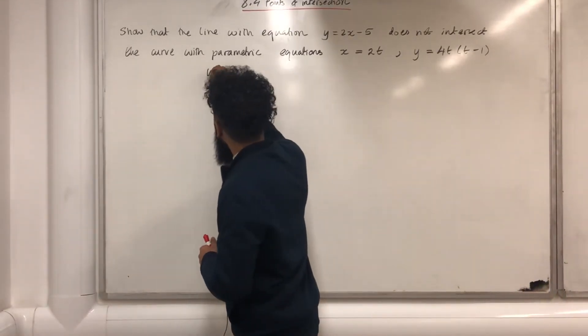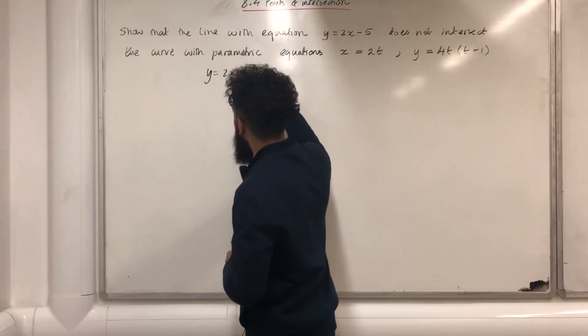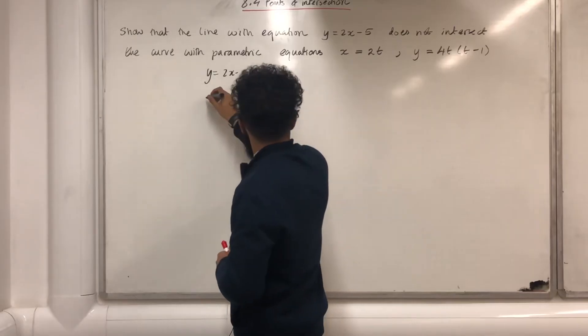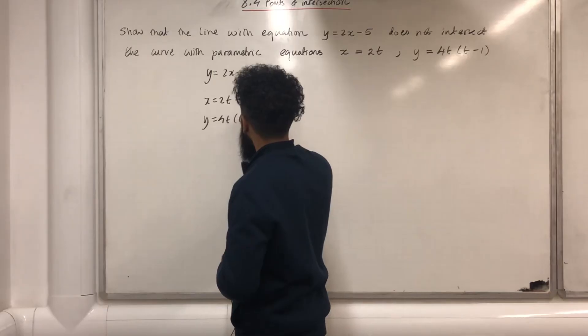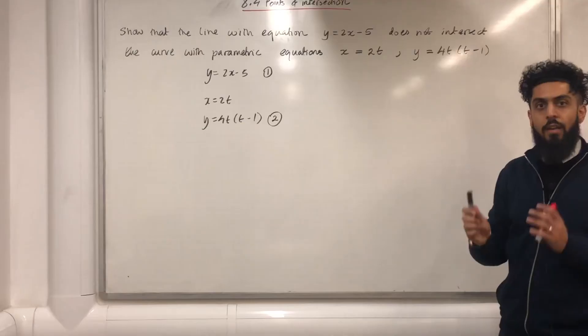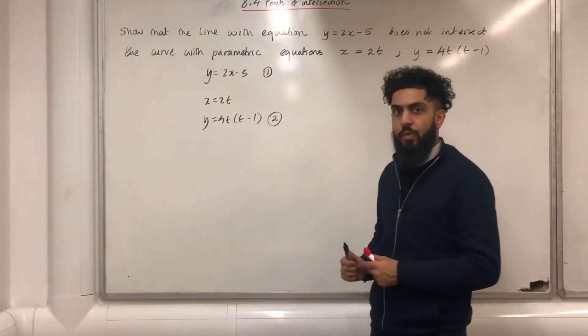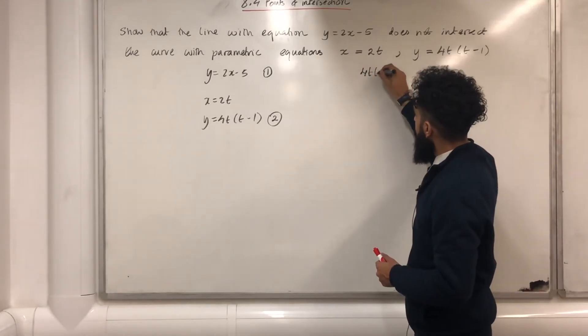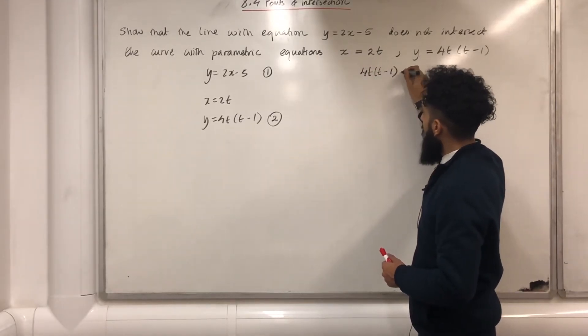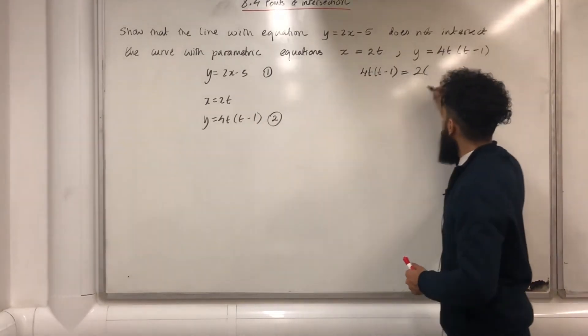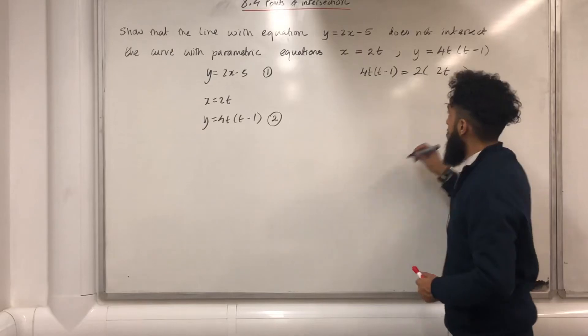I've got y equal 2x minus 5, which represents the Cartesian equation of the straight line, and I've got x equal 2t and y equal 4t times t minus 1 in bracket, which represents the parametric equations of the curve. I can replace the y with 4t times t minus 1 in bracket, and I can replace the x with 2t. I've got the minus 5 as well here.